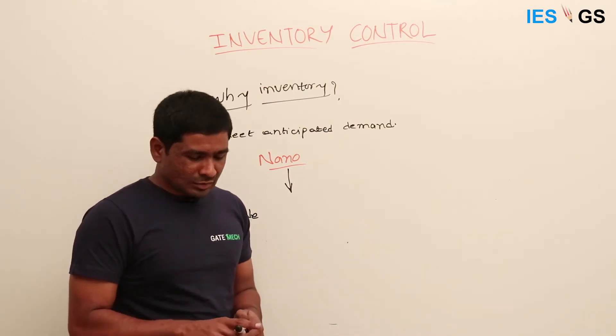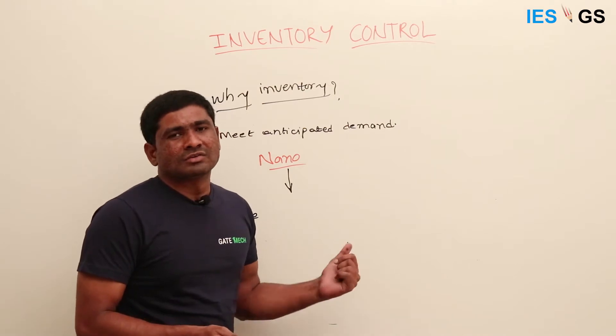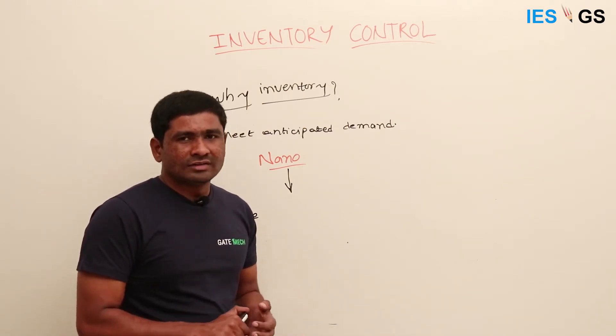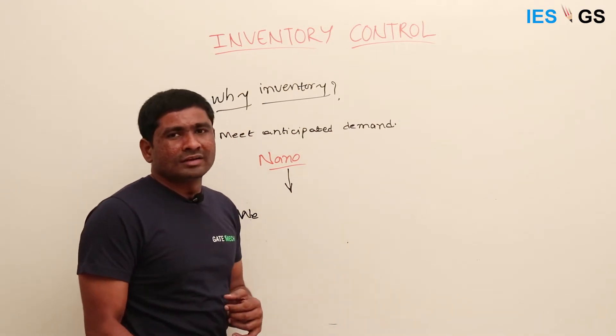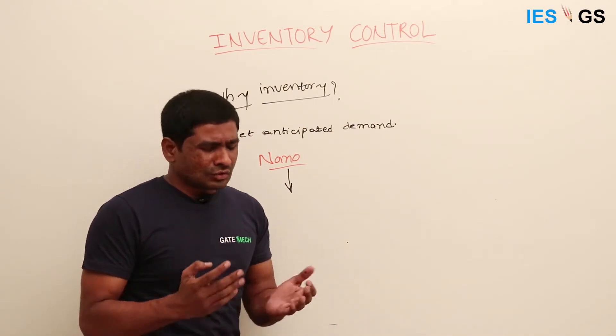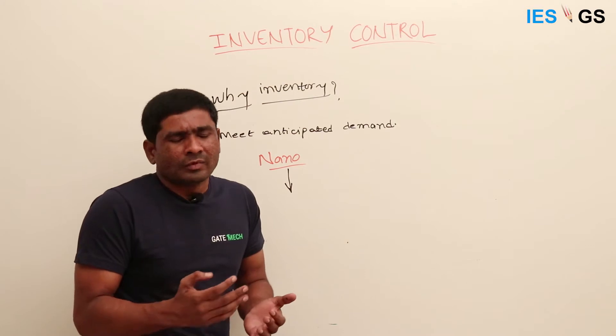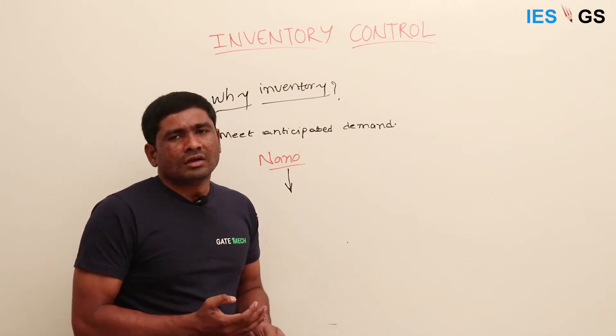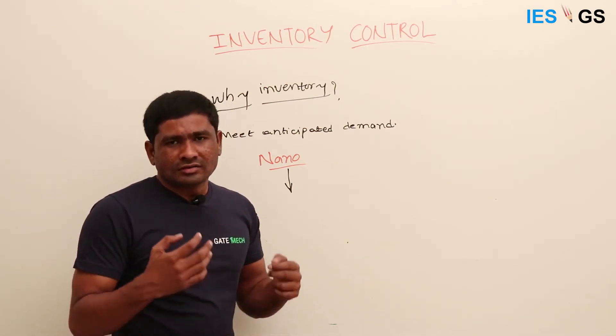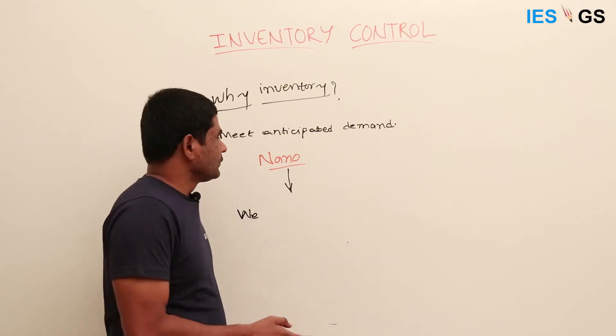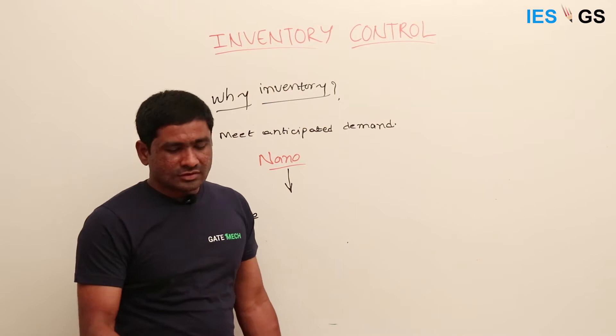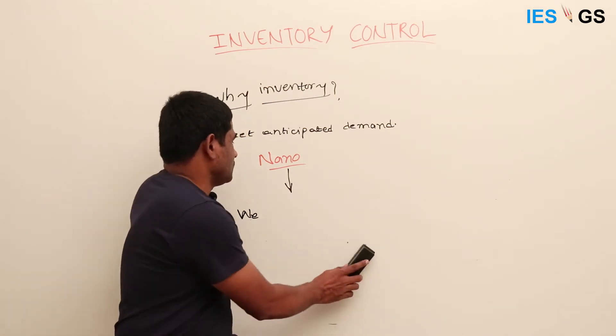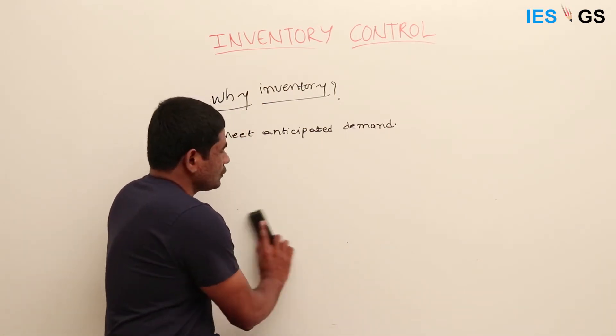If you are unable to deliver the product, then customers will be dissatisfied with the service and delivery. That's what happened with the Nano. By the time they produced the cars, it took more than one year from the day of announcement. Everyone lost their excitement, and finally Nano couldn't achieve the success it promised.